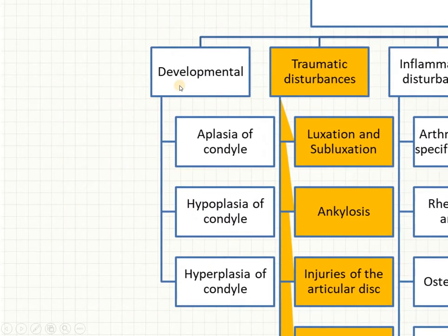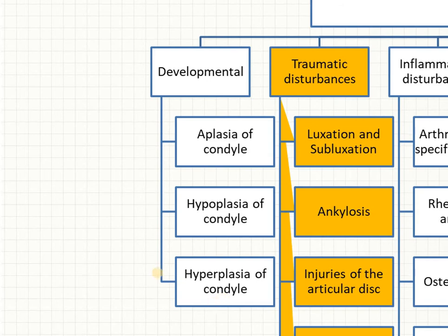Among developmental disorders, aplasia refers to complete absence of the condyle. A smaller-sized condyle, either unilateral or bilateral, is called hypoplasia of the condyle. Excessive growth of the condyle results in hyperplasia. Both hypoplasia and hyperplasia give asymmetry to the face.